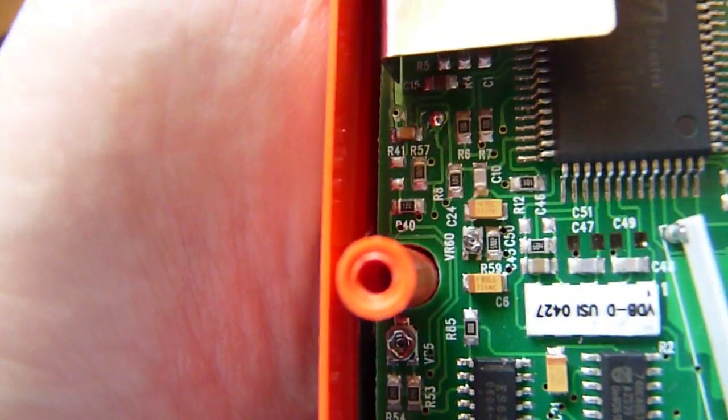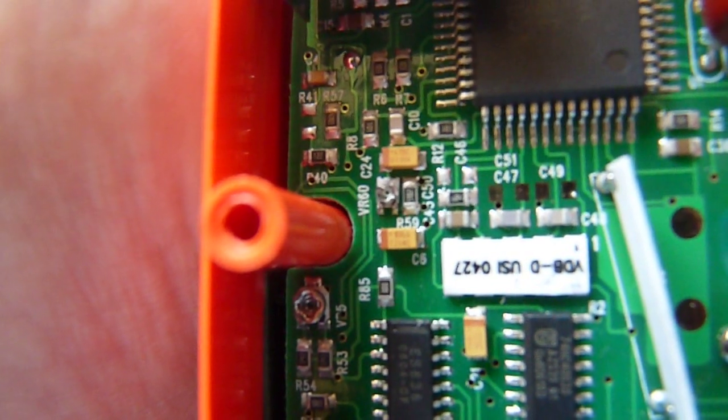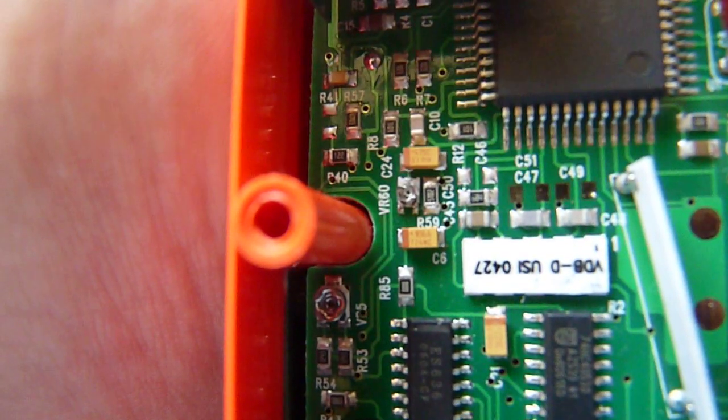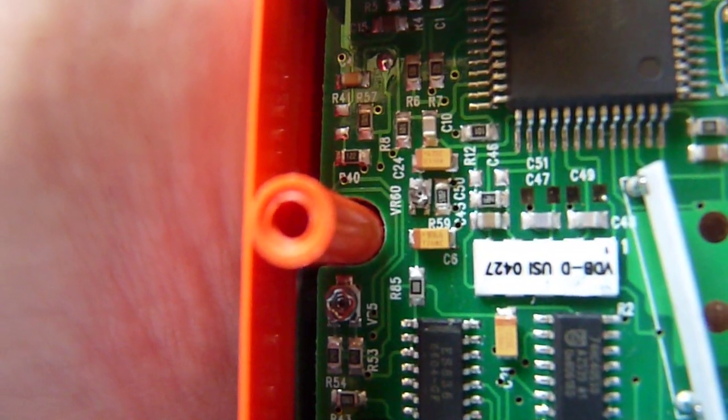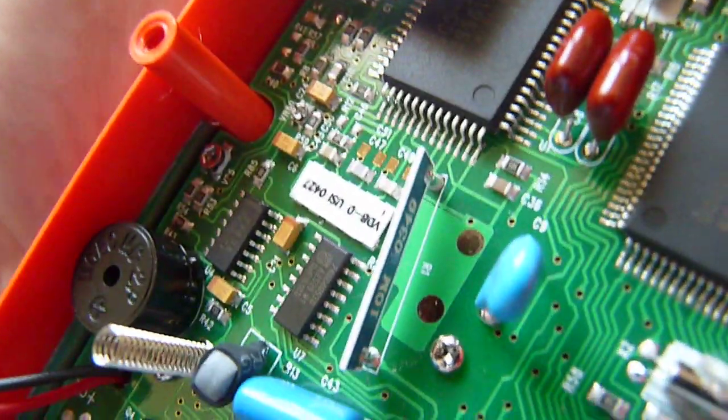But I did find a pot that changes the voltage reading on the screen. And that's this one here, it's between the two orange caps, to the left of that resistor, and it's labeled VR60.